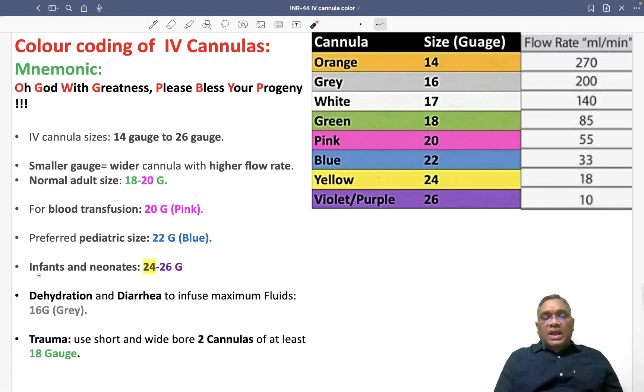Infants and neonates use 24 to 26 gauge, which is yellow to purple. So 24 to 26 is for infants and neonates, yellow to purple.